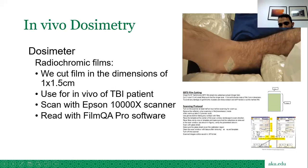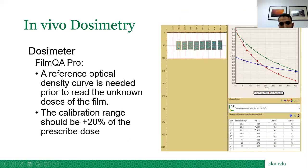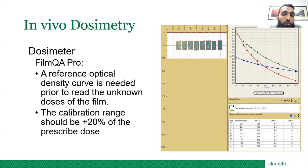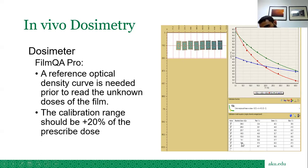Films are read using FilmQA Pro software. We first generate a calibration curve by exposing films to known doses. The calibration chips range from zero (background) through doses of approximately 52.9, 71.7, 103.8, 145.5, 203.77, 285, and up to 398.8 cGy, producing corresponding optical density (blackening) values. Optical density indicates the degree of film blackening as a function of dose.